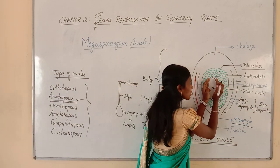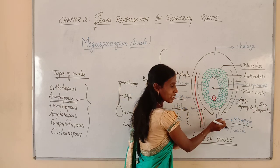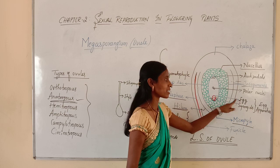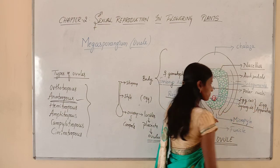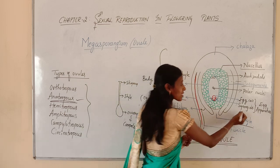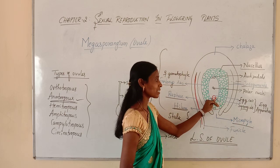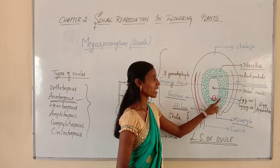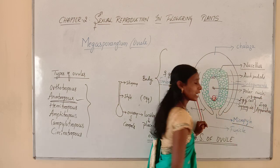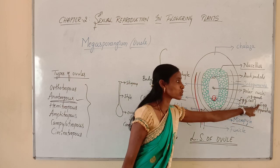Let us see what cells are present inside this embryo sac. Within the embryo sac, towards the micropylar end, you can find three cells. Among these three cells, the large central cell is called the egg cell, and there are two pear-shaped cells called synergids on either side of the egg. Try to remember: towards the micropylar end within the embryo sac, the larger cell is the egg cell which is the female gamete, and the two pear-shaped cells on either side are called synergids. These three together are called egg apparatus.